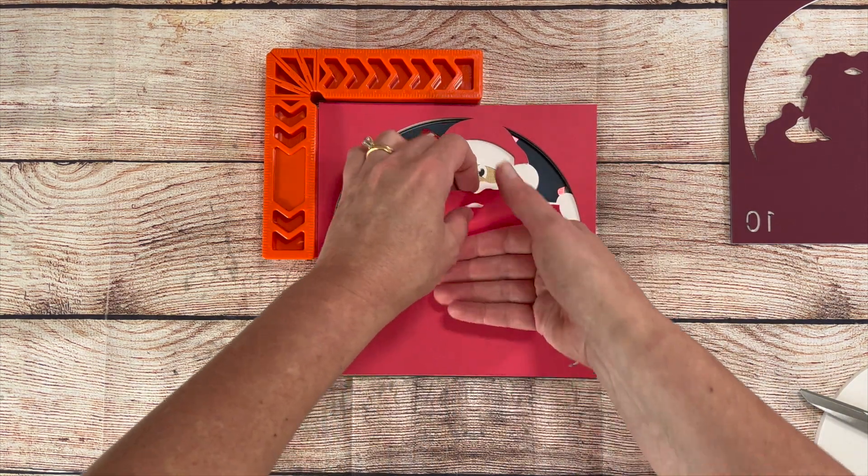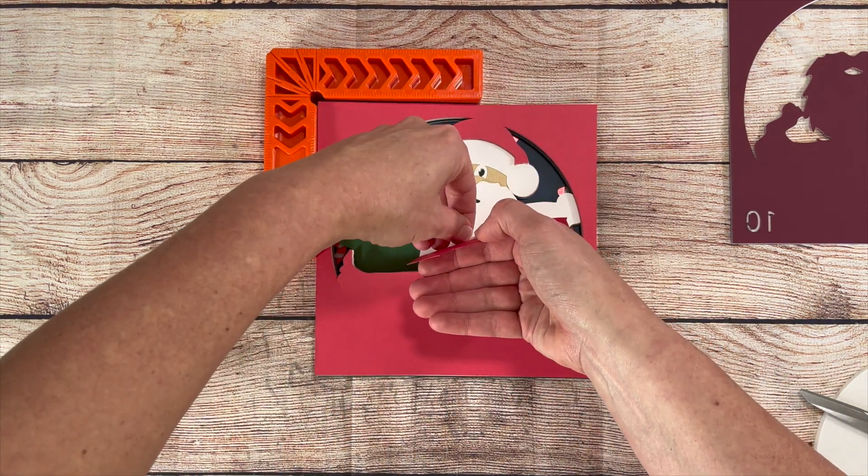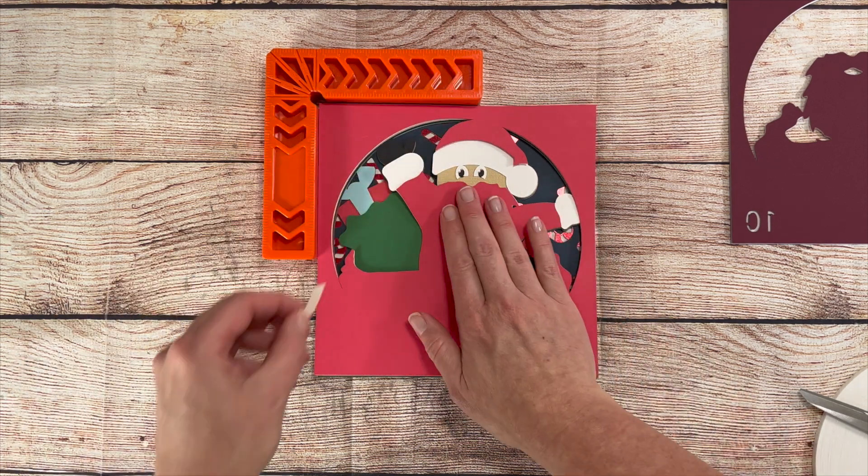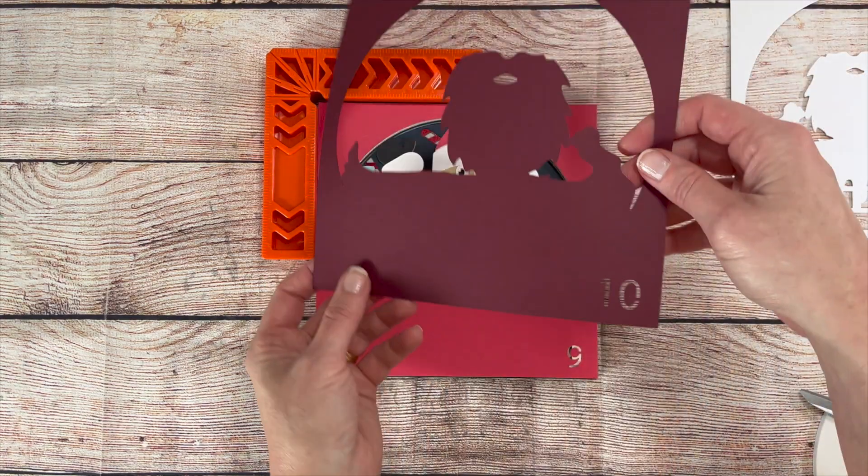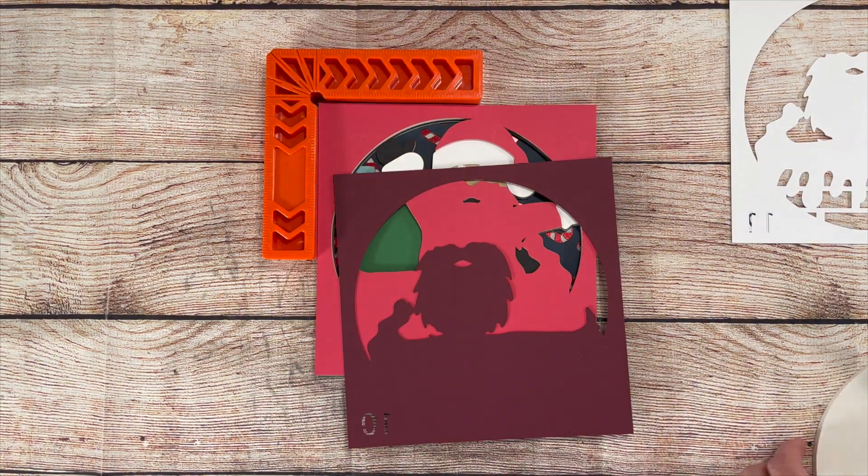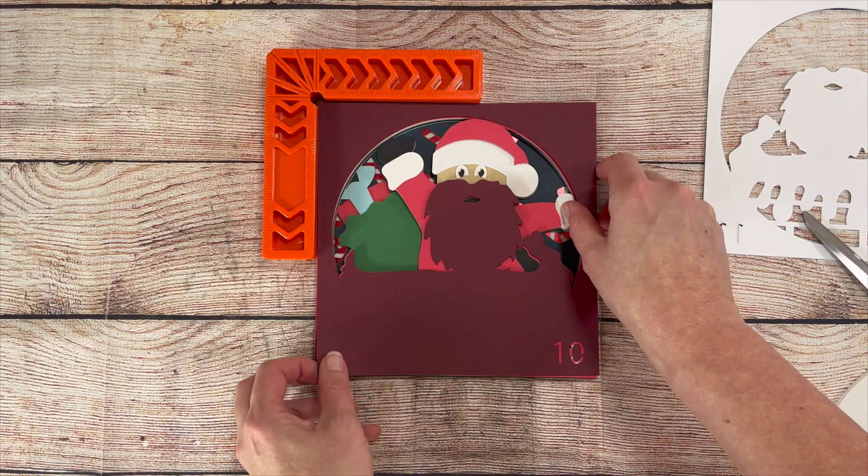I don't pull the backing off the foam tape that's going in the middle until I have that layer laid down. This helps me get the layer lined up without getting the middle stuck. I can then easily go back and pull the backing off to stick the middle right in place.